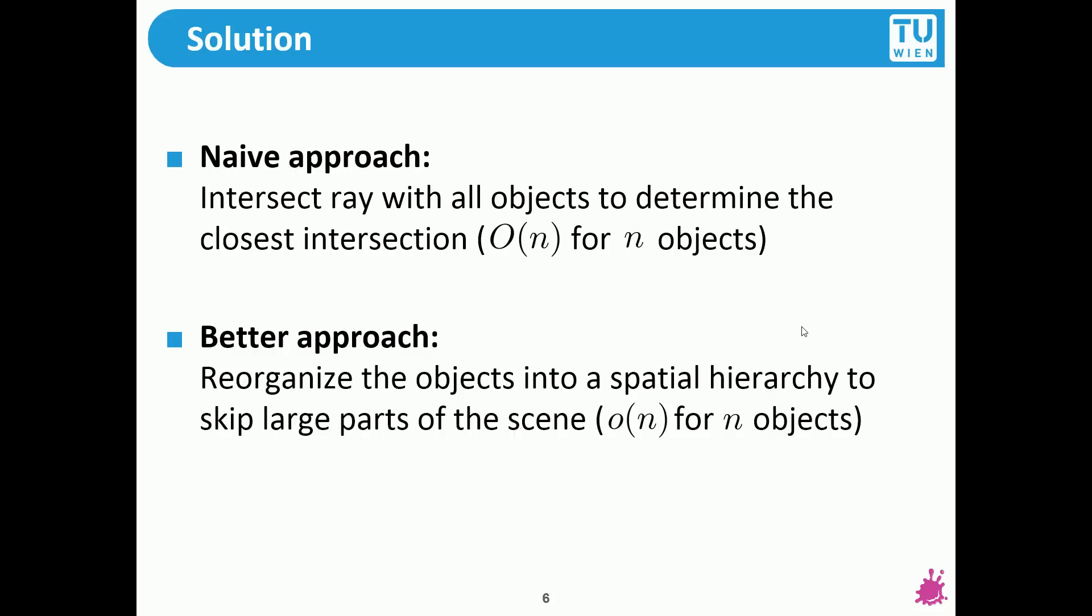A better approach would be to reorganize all the objects in your scene, say the triangles, in some kind of spatial hierarchy. So that I know that in the left half of this room are these triangles, in the right half are these triangles. If I have a ray that only travels through one half of the room, then I can immediately discard half of the triangles in my scene and don't need to intersect against them. This approach leads to a sublinear complexity. Usually it gets close to logarithmic.